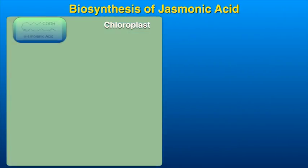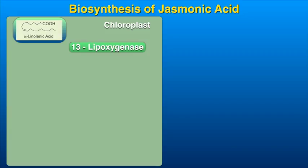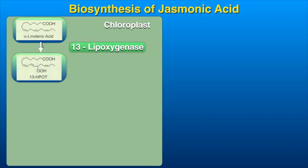Jasmonic acid is synthesized from polyunsaturated fatty acids like alpha-linolenic acid present in chloroplast membranes. Activation of lipase releases fatty acids from the membrane. Linolenic acid is oxygenated by lipoxygenases (LOX) to form several types of oxylipins which include jasmonic acid. The activity of one such LOX, called 13-LOX, gives rise to 13-hydroperoxy octadecatrianoic acid, or 13-HPOT.